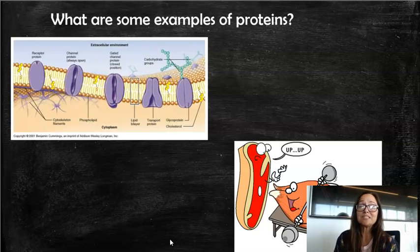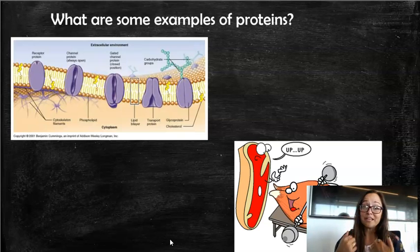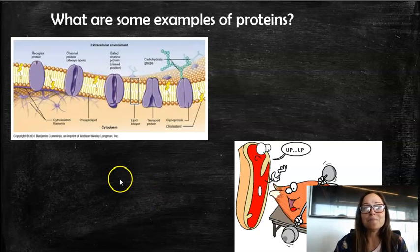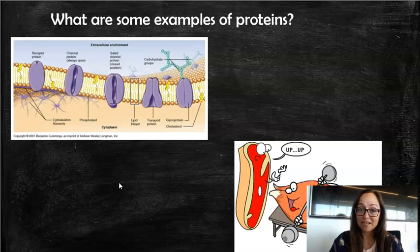When someone lifts weights and they are increasing their muscle size or their muscle mass, they actually need to make sure they're eating protein and eating amino acids in order to build up more muscles. This is also why when you eat steak or chicken or pork chop, you actually are eating the muscles of that animal and therefore that meat has a lot of protein.